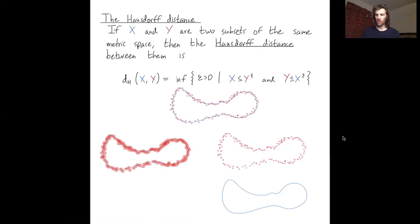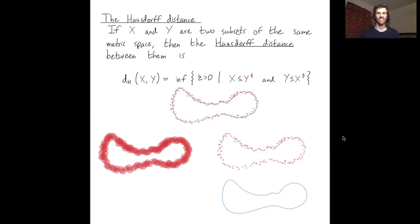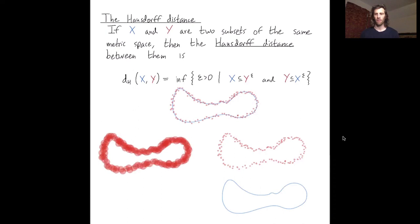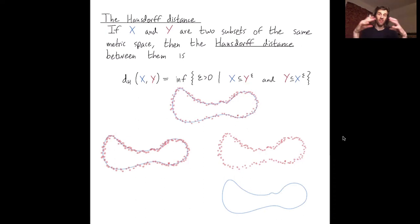I'm showing you various epsilon thickenings of y, and I look at the smallest epsilon such that x is finally contained in these epsilon thickenings. I could thicken further, but there's no need — x is already contained. So that's what this notation means: the smallest epsilon so that x is contained in the thickenings of the red points y.